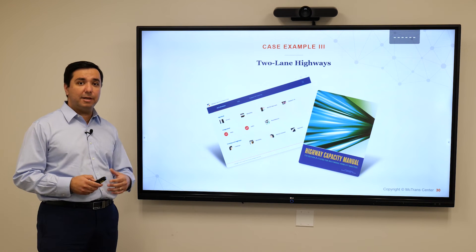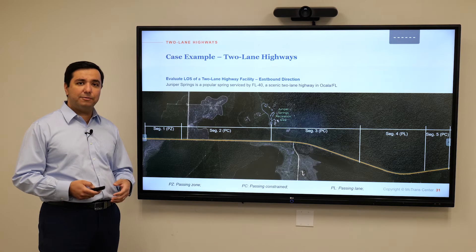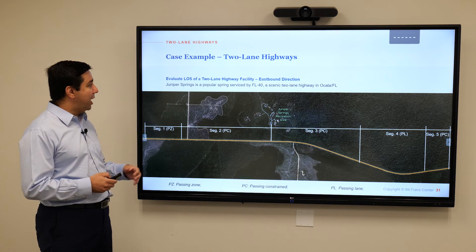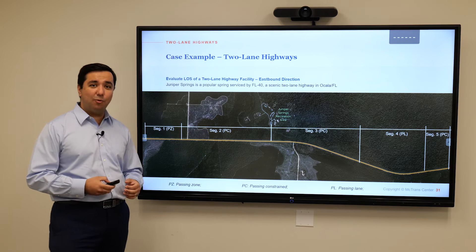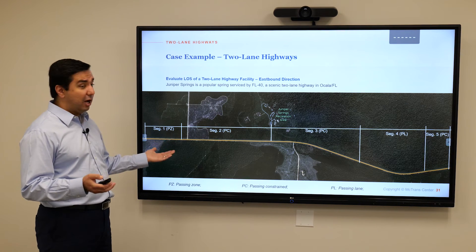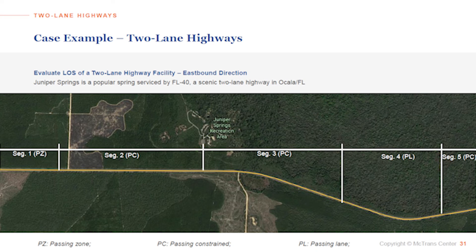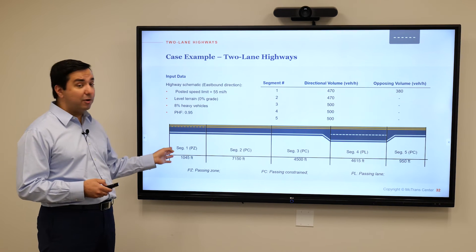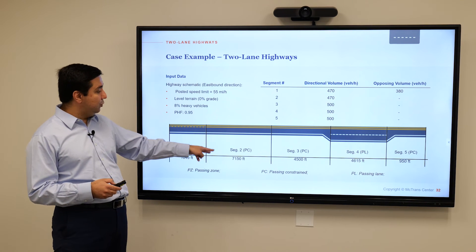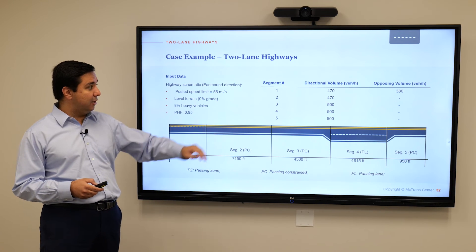I have a real-world case study that I want to go over so that we become familiar with how this methodology works in practice. I have picked a two-lane highway facility in Ocala, Florida, which is just half an hour south of where we are, in a recreational area called Juniper Spring — Florida Highway 40. I want to analyze this two-lane highway using HCM and see what performance measures it can predict. Based on the geometry, we have divided this facility into five segments: first a passing zone, followed by two passing constraints, one passing lane, and then another passing constraint.